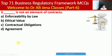Next MCQ: which of the following is not an element of contracts? Whether enforceability by law, ethical value, contractual obligations, or agreements. Here B is the right option — ethical value is not an element of contracts.